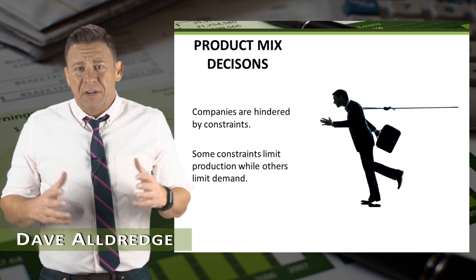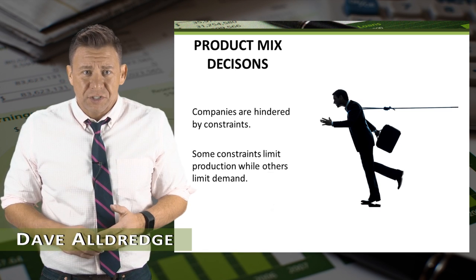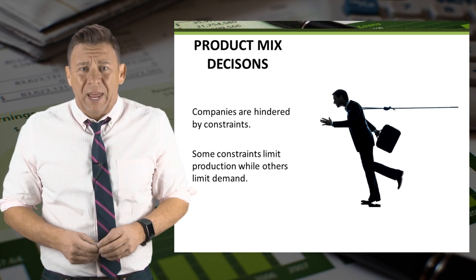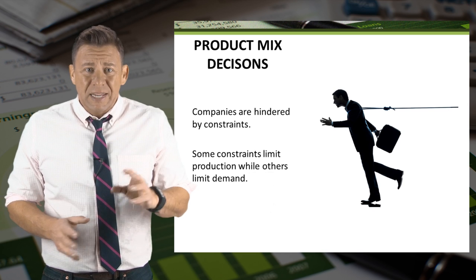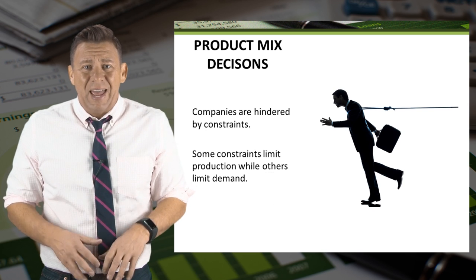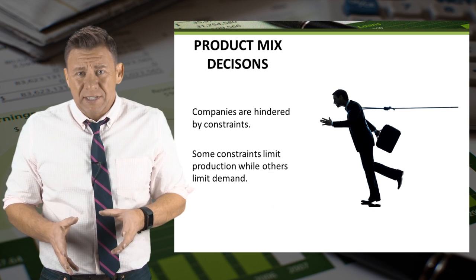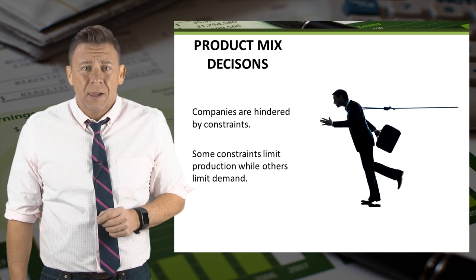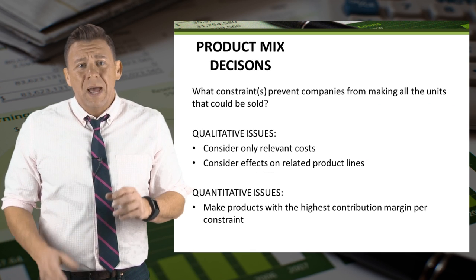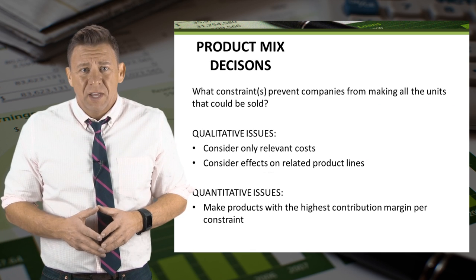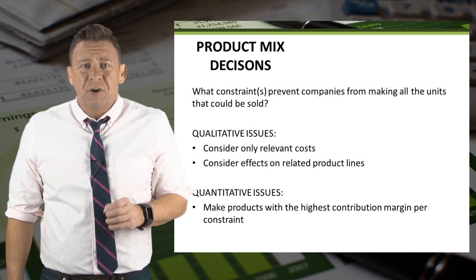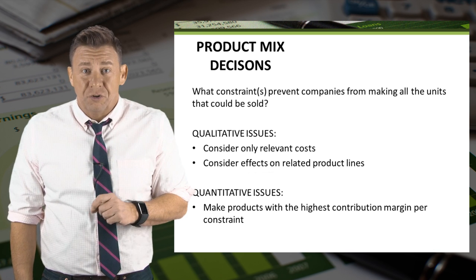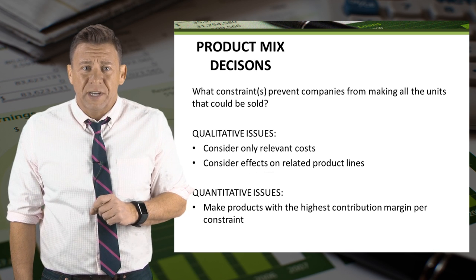Companies don't have unlimited resources, nor unlimited demand for their products. Because of this, they have constraints which might limit production or demand. When companies are faced with constraints, they need to focus on the items with the highest contribution margin per constraint.